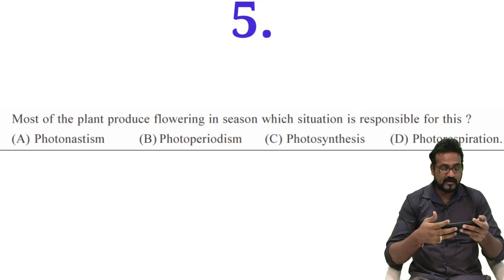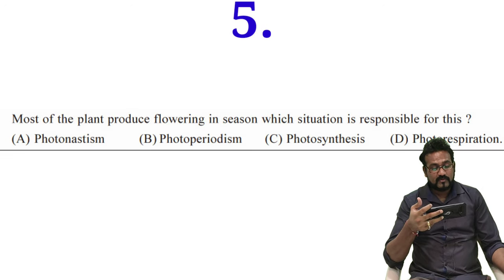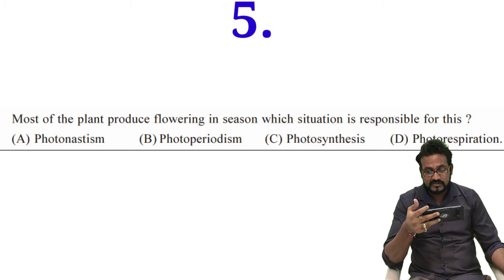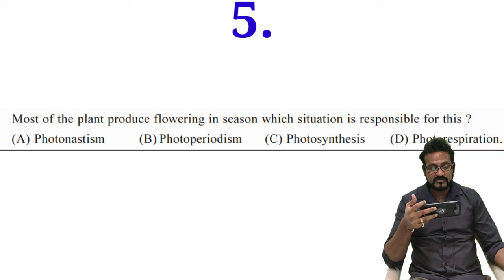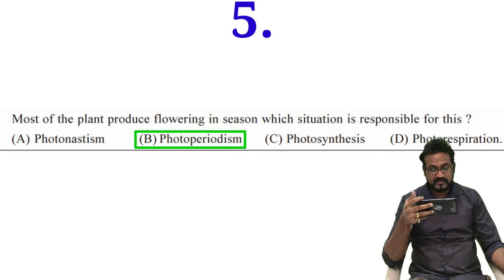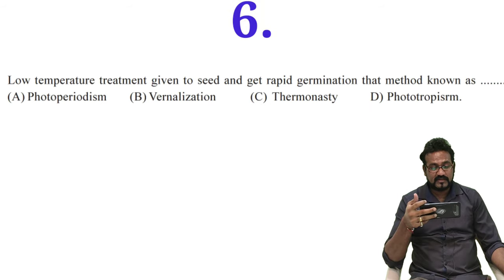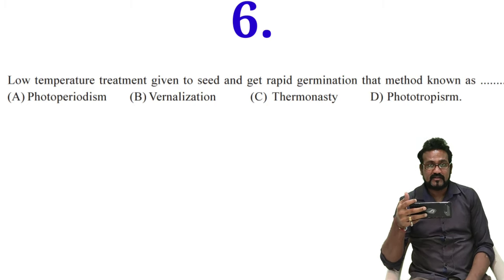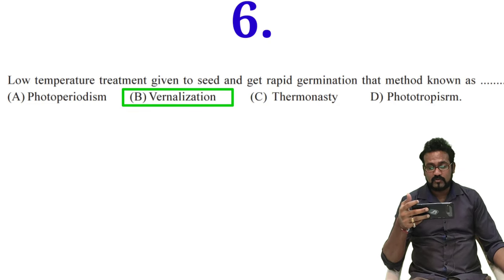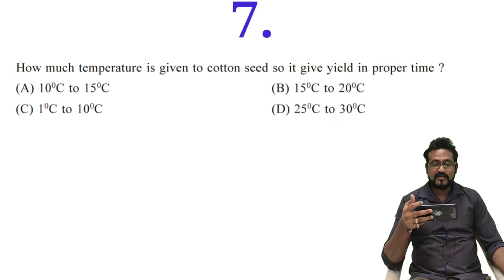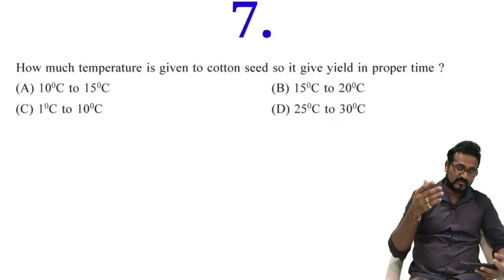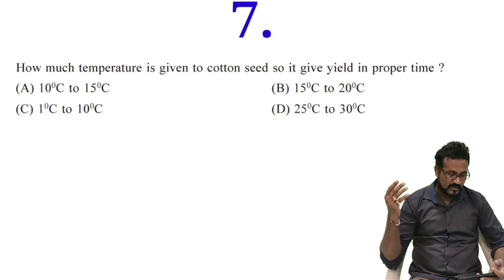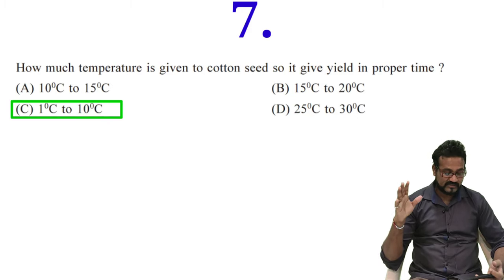Fifth question is most of the plants produce flowering in season in which situation is responsible for this. Obviously photoperiodism is the answer. Sixth question is low temperature treatment is given to seed and get rapid germination. That method is known as - option B will be possible answer because it is chilling treatment. How much temperature should be proper in vernalization? The temperature range between 1 degree Celsius to 10 degree Celsius is the right answer. Please remember this.